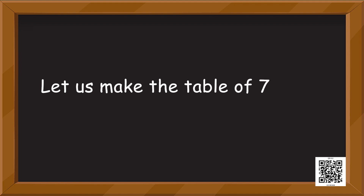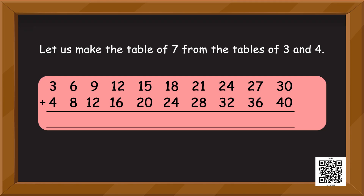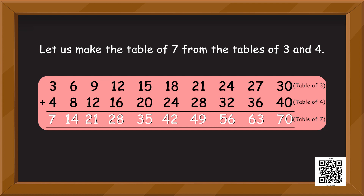Now let us make the table of seven from the tables of three and four. It's not just the same number's table that can give us a result — we can add the tables of two different numbers to get the table of a third one. We just have to check the sum of those two numbers. For example, three and four equal seven, so when we add the tables of three and four we get the table of seven. Can you see on the screen how table of three plus table of four gives us table of seven from one to ten?